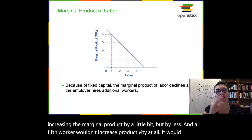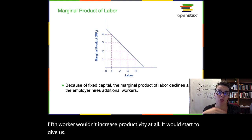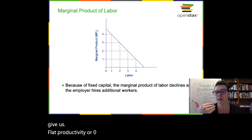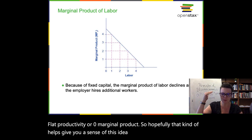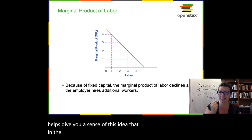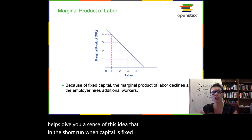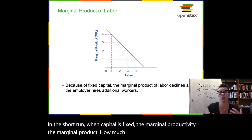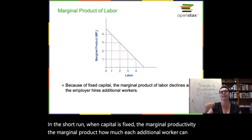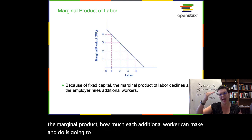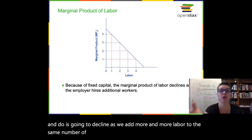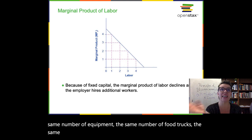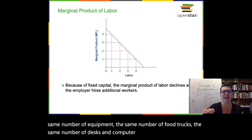In the short run, when capital is fixed, the marginal product of labor — how much each additional worker can make and do — is going to decline as we add more and more labor to the same number of equipment: the same number of food trucks, the same number of desks and computers, that kind of thing.